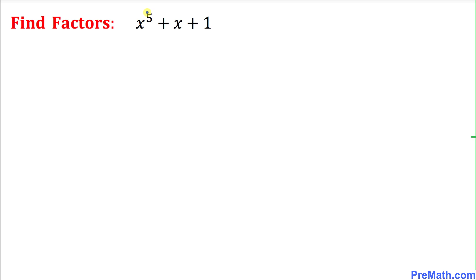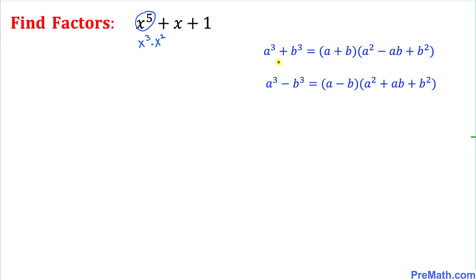We can see that x⁵ could be written as x³ times x². Here are two formulas: one is the sum of two cubes and the other is the difference of two cubes. We want to apply one of these formulas to factorize this given polynomial.